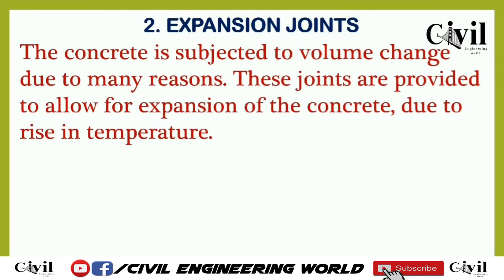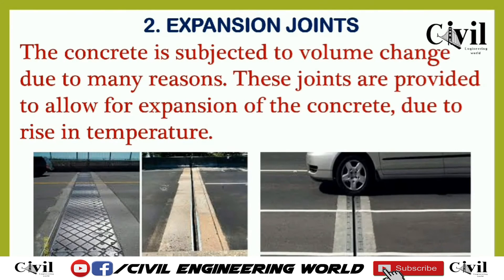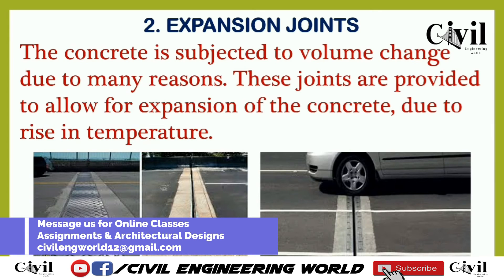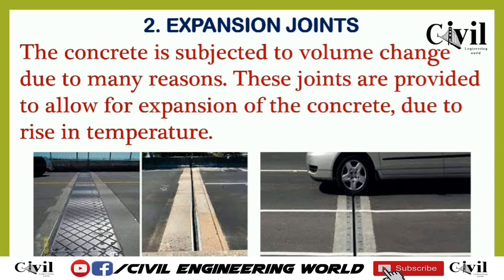The second kind of joint is expansion joints. Concrete is sometimes subjected to volume change due to heavy loads or change in temperature, which causes pressure. In order to accommodate that pressure, we provide expansion joints. These joints are usually provided after every 18 to 21 meters of length, and their width may vary from 2 to 2.5 centimeters, depending upon the location and temperature.